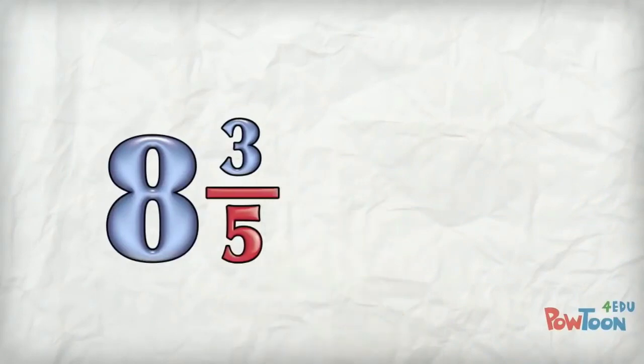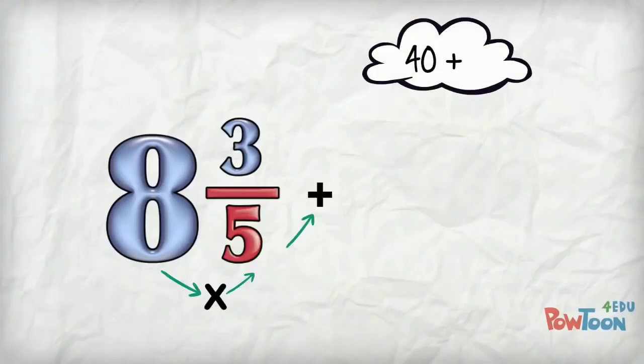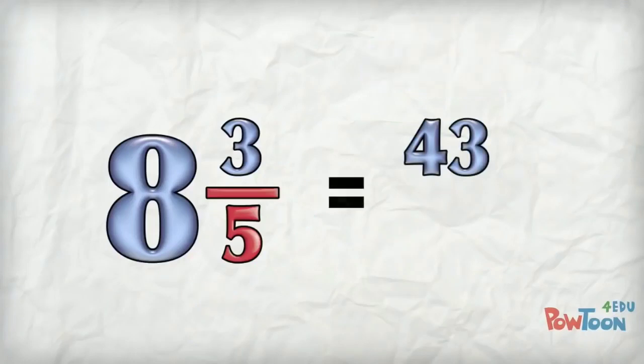Last one. Eight and three fifths. Eight holes, each hole is worth five parts. So eight times five is 40, plus the remaining three. That's 43. Put that back over the denominator of five. Done!